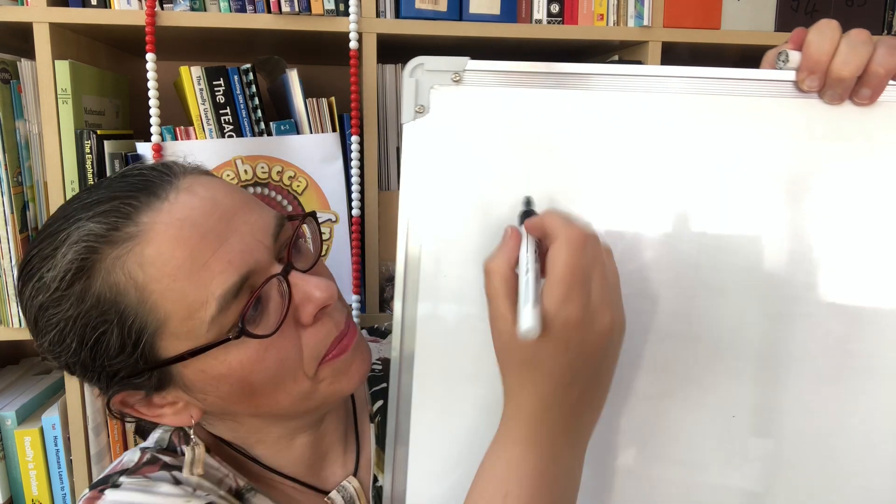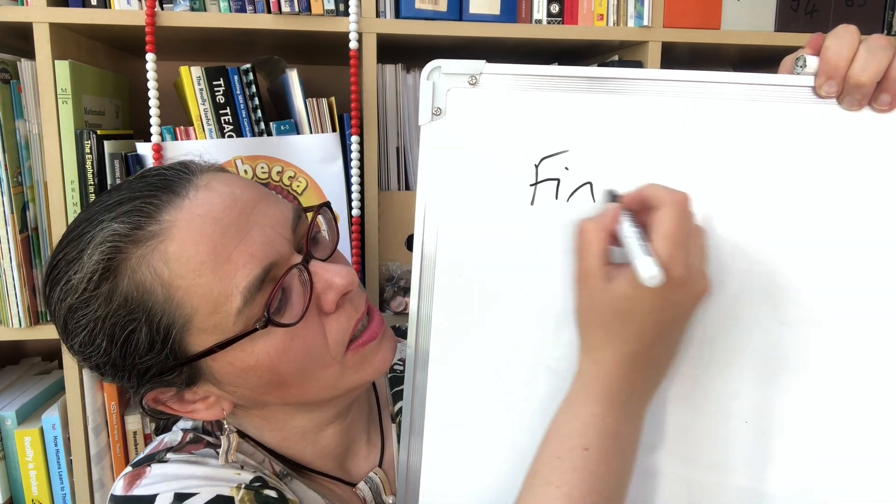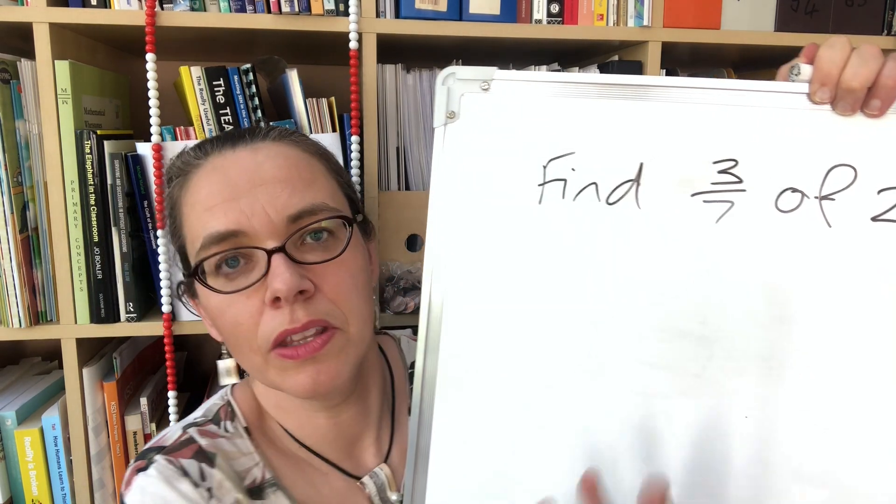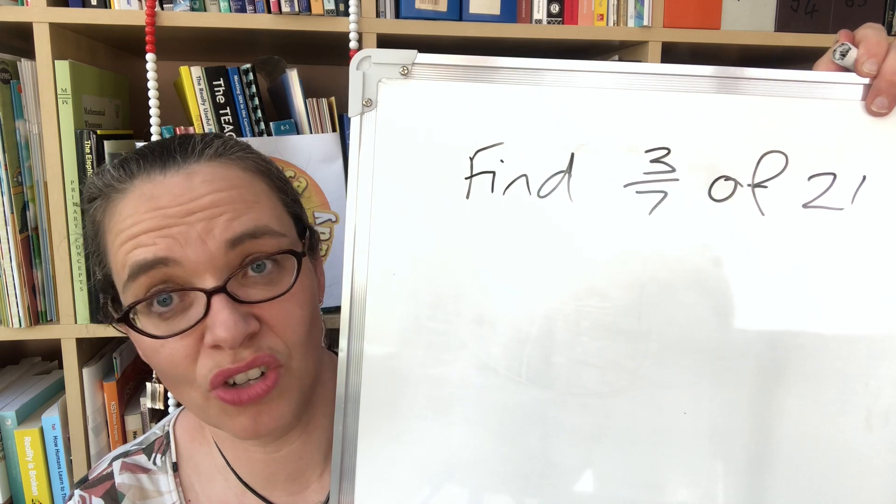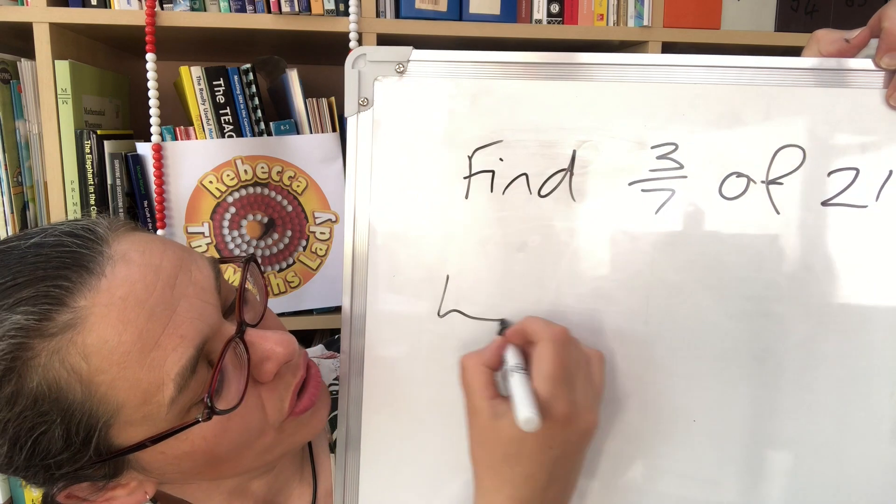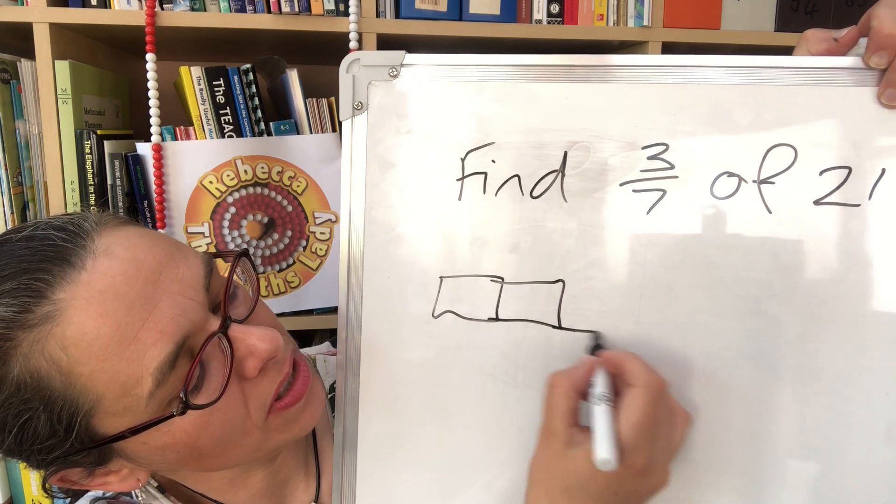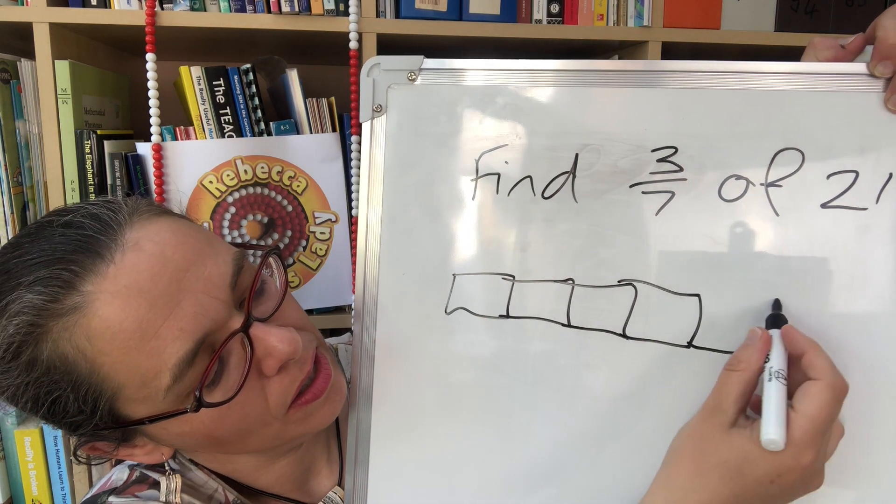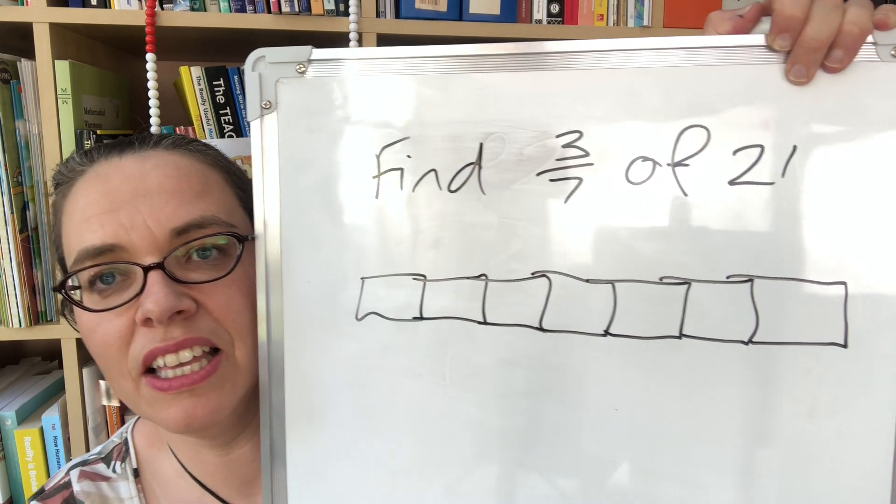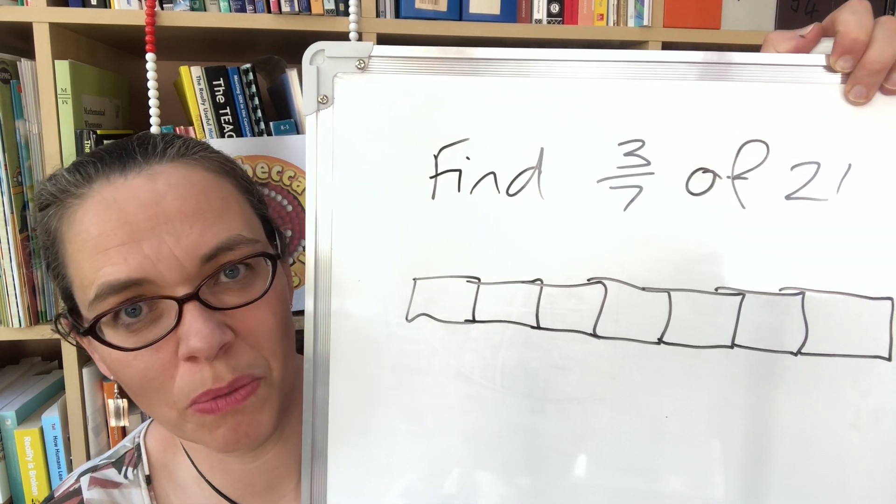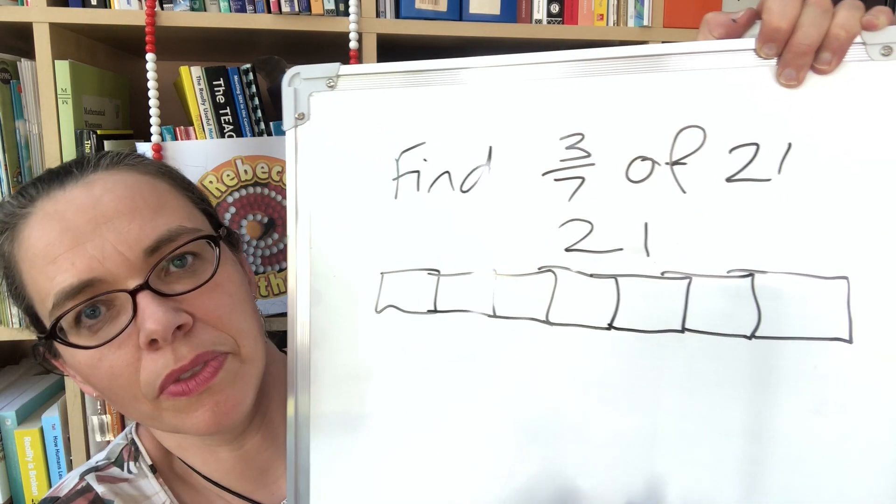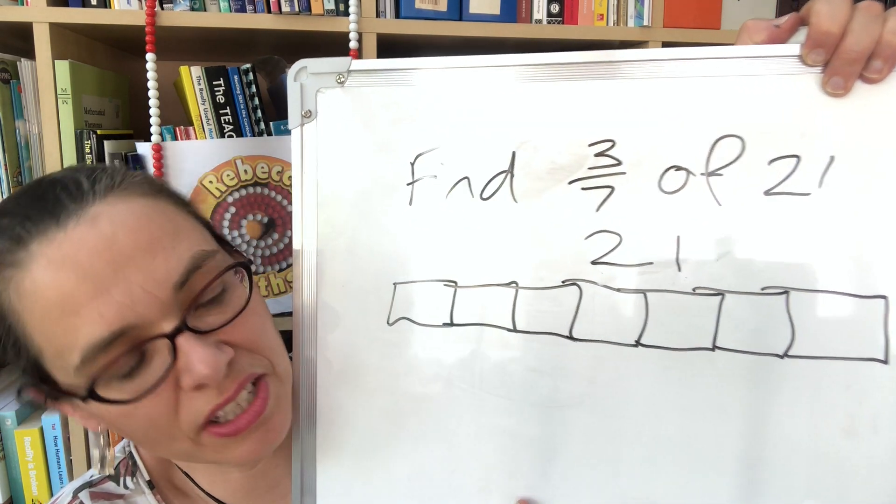Let's look at a problem like find three sevenths of 21 that we're going to struggle to do with circles. Now it's very easy just to draw sevenths by drawing seven boxes next to each other to represent something cut into sevens. That's much easier than drawing something and trying to cut it into seven equal parts. So this is our whole amount, this is the 21 and we're going to share the 21 fairly.